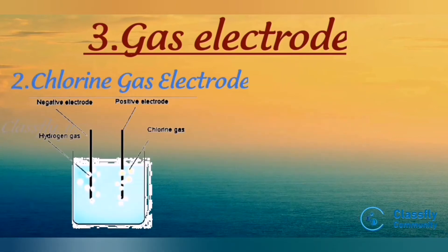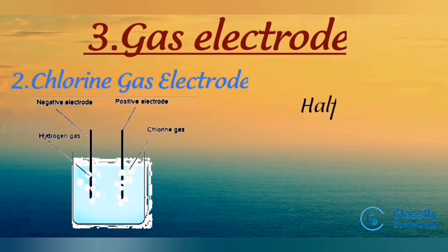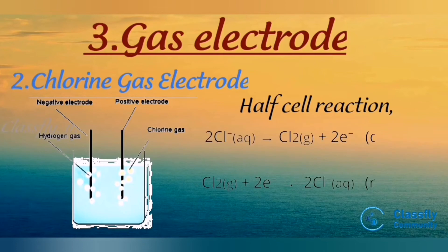The second example of a gas electrode is the chlorine gas electrode. This is an anion electrode. Chlorine gas is represented as: Pt | Cl₂(g, 1 atm) | Cl⁻(aq, 1 M). The half-cell reactions are: 2Cl⁻(aq) → Cl₂(g) + 2e⁻ and Cl₂(g) + 2e⁻ → 2Cl⁻(aq).